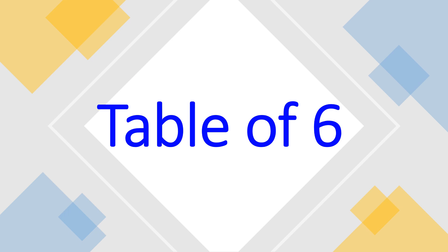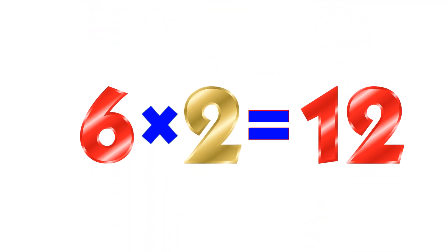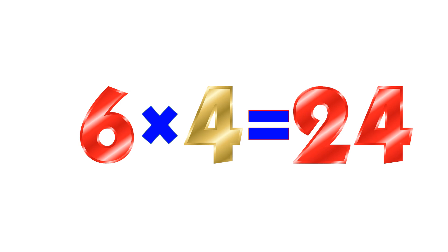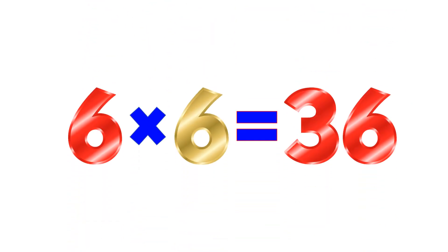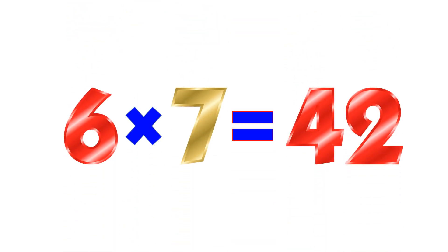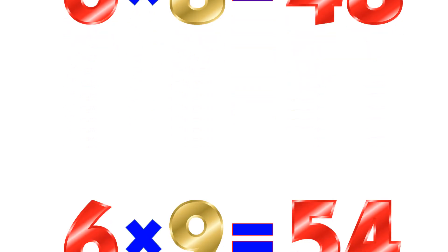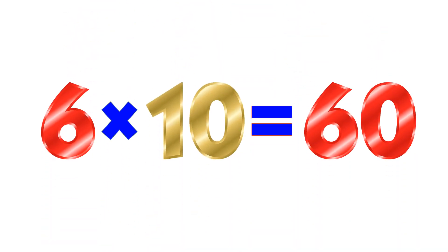Table of 6. 6×1=6. 6×2=12. 6×3=18. 6×4=24. 6×5=30. 6×6=36. 6×7=42. 6×8=48. 6×9=54. 6×10=60.